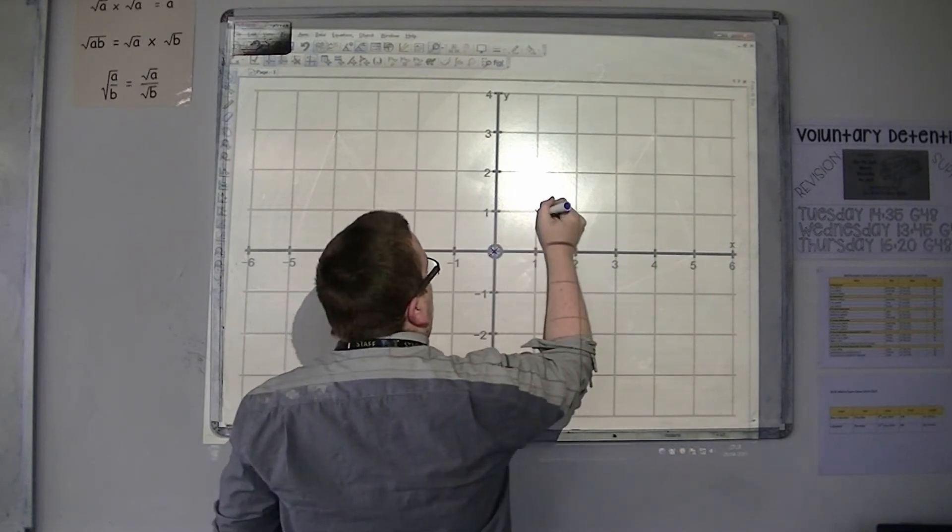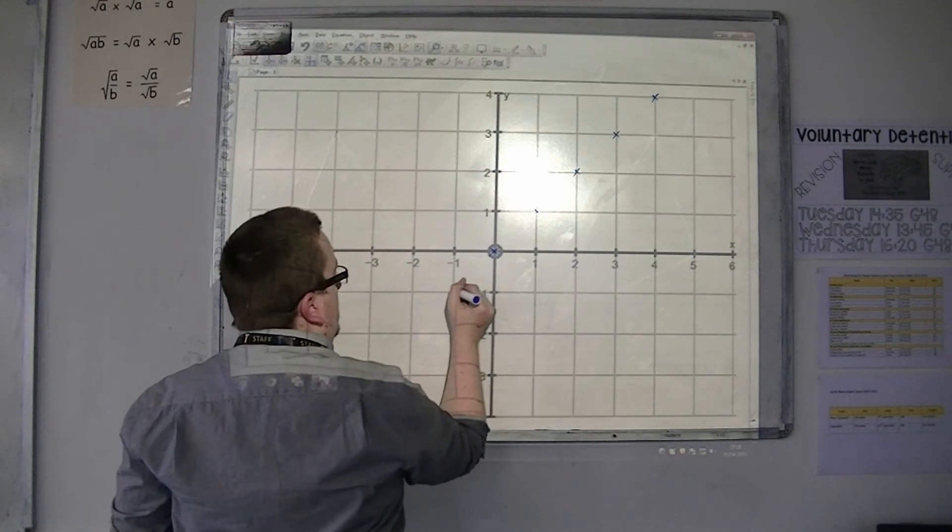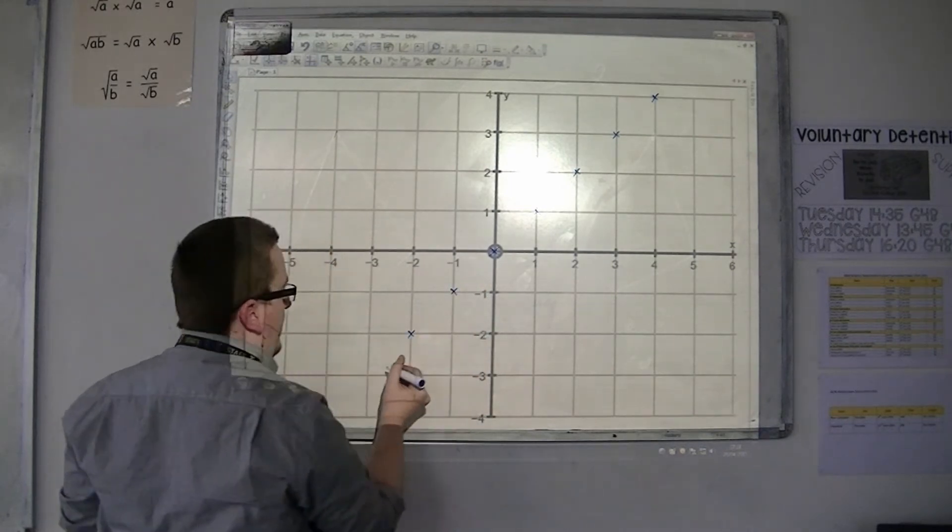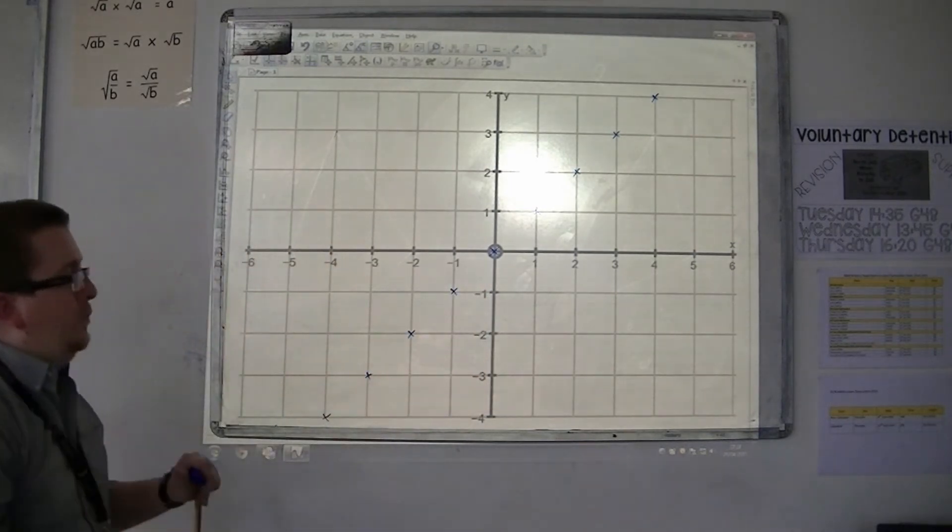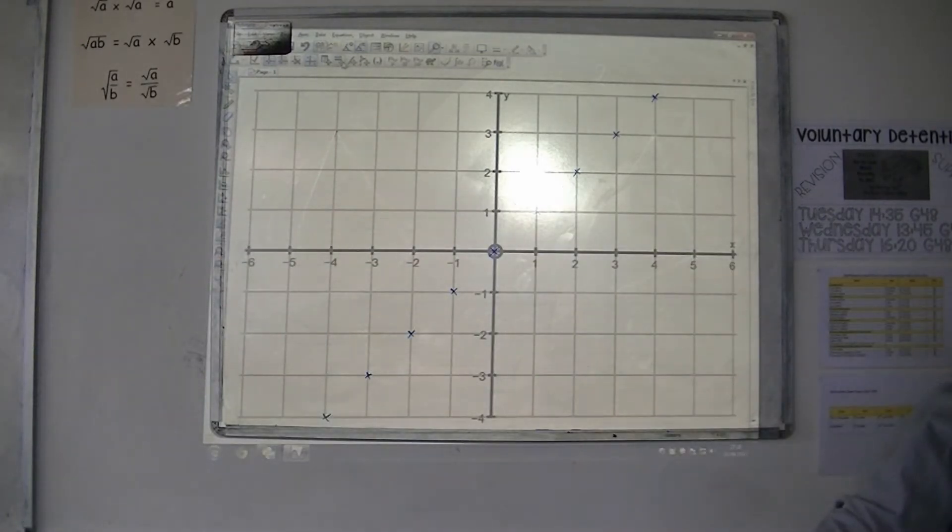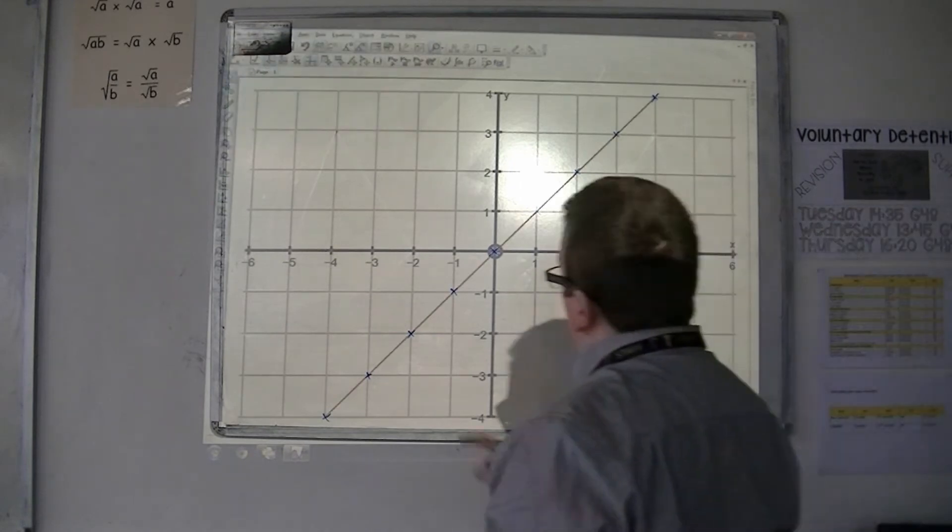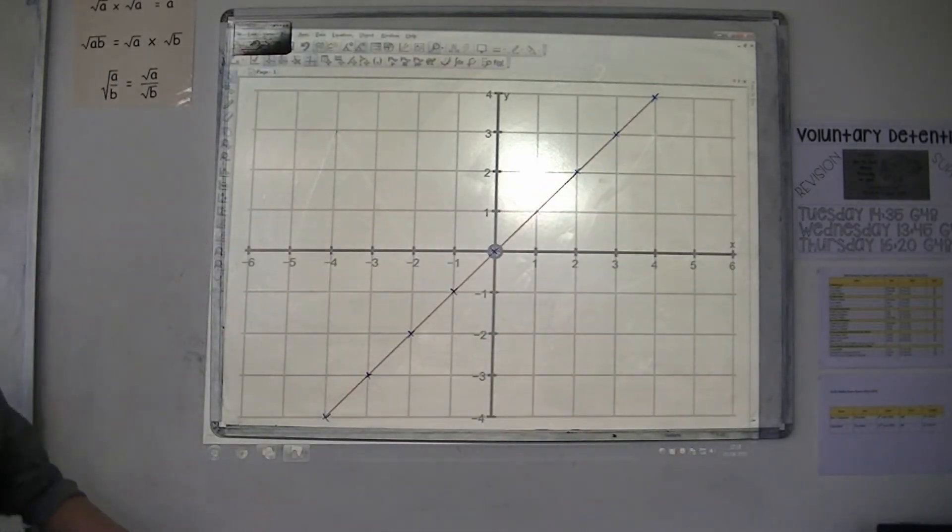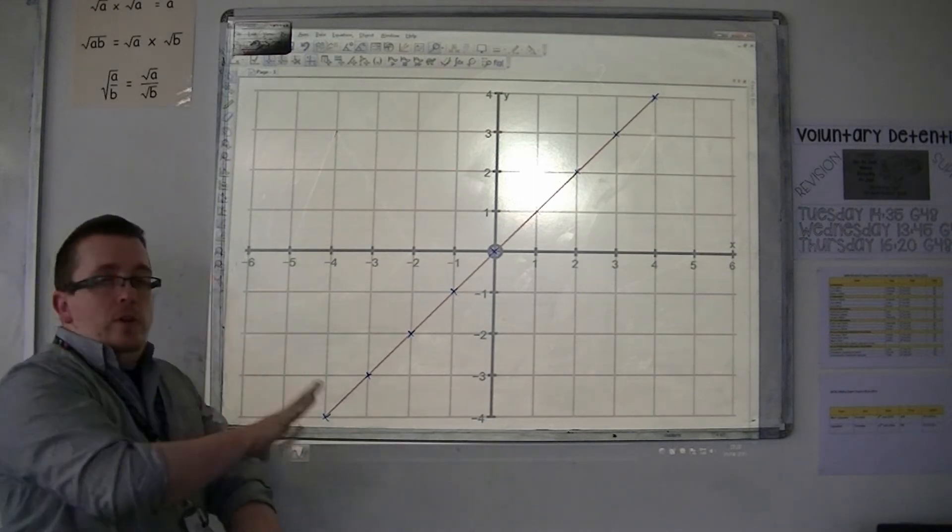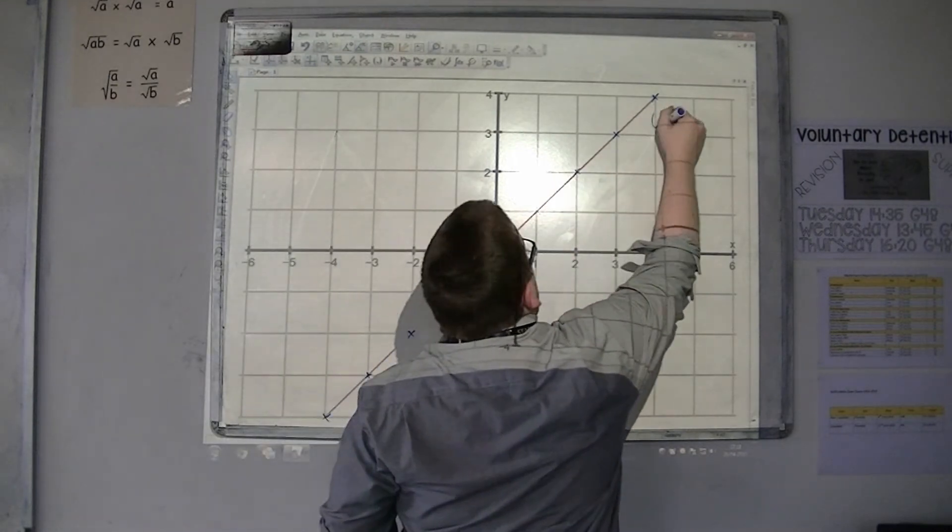So, 0,0; 1,1; 2,2; 3,3; 4,4; minus 1, minus 1; minus 2, minus 2; minus 3, minus 3; minus 4, minus 4. So this would be the line y equals x. Let's plot that one there. There's y equals x. So that is a very useful line to know.